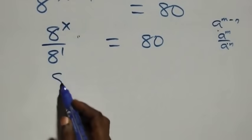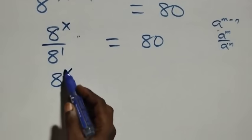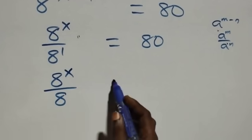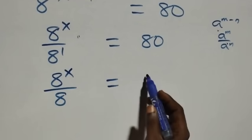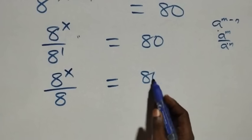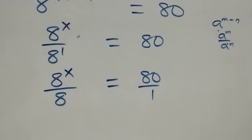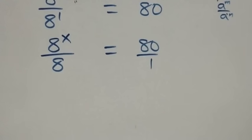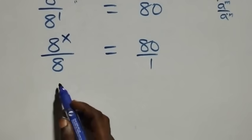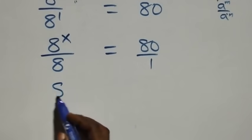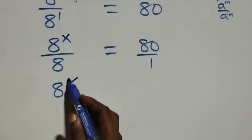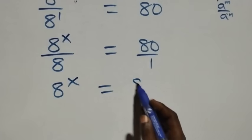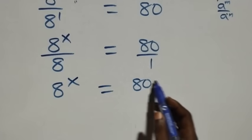This is the same thing as 8 raised to power x over 8 raised to power 1, same thing as 80 over 1. And when we cross multiply, 8 raised to power x times 1 is the same as 8 raised to power x, equals to 80 times 8 on this side.